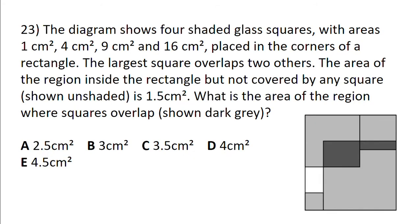The diagram shows four shaded graph squares with areas one centimeter squared, four centimeters squared, nine centimeters squared, and sixteen centimeters squared placed in the corners of a rectangle. The largest square overlaps two others. The area of the region inside the rectangle but not covered by any square, also shown unshaded, is 1.5 centimeters squared.